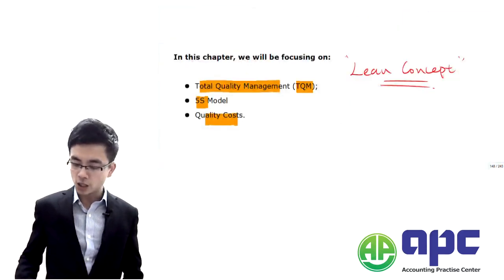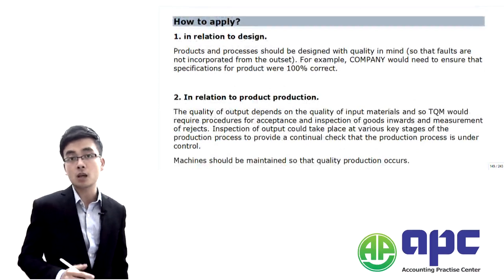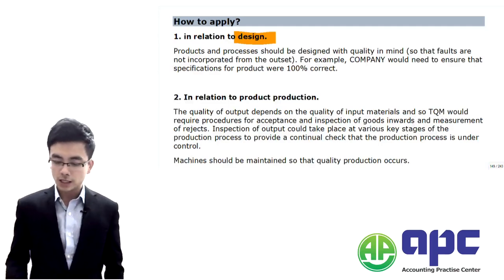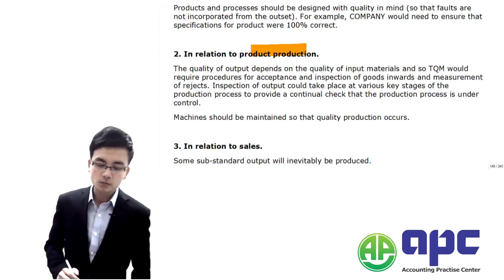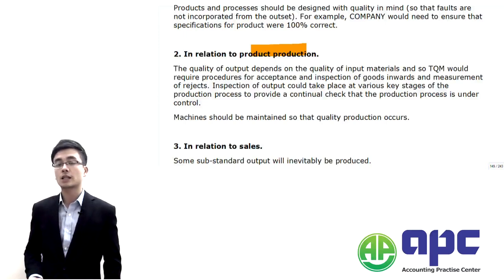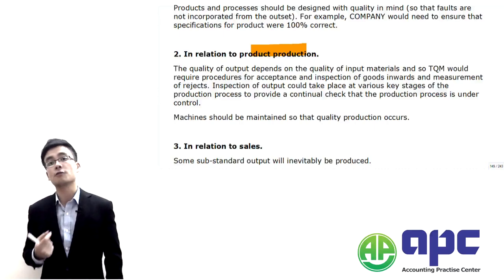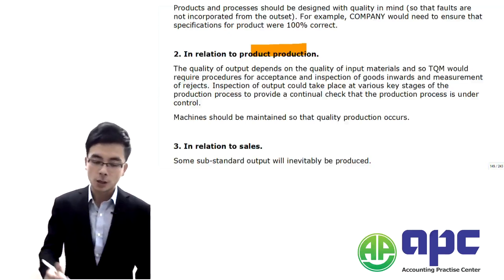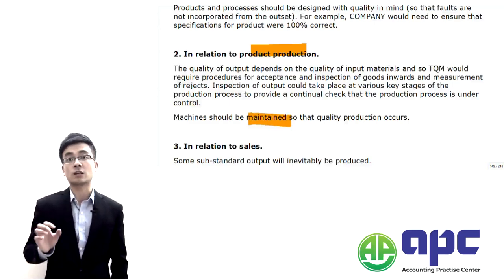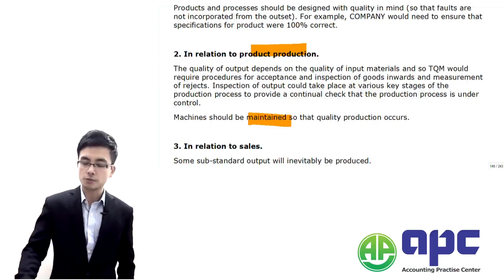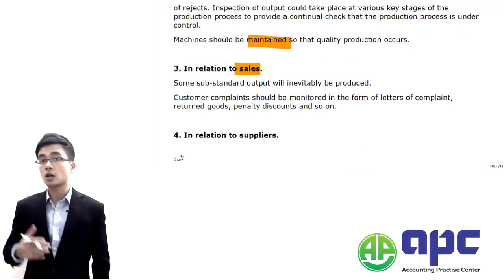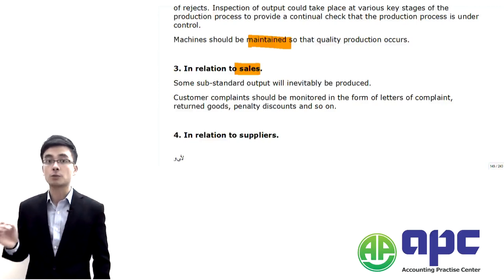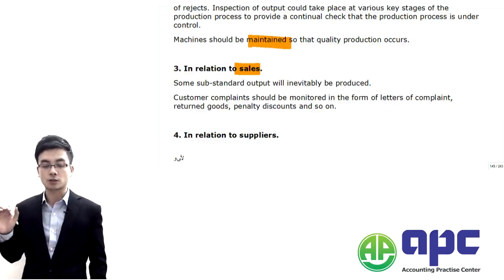Let's look at examples of how to get things right at the first time. First, related to design — if the design is not correct at the first time, the customer will not buy the product. Second, during production — how to manufacture a product that minimises waste from the start. Machine maintenance is also absolutely important in making sure efficiency during the production process. Related to sales: if the customer doesn't like your product, getting that feedback instantly means you can redevelop and provide the correct product to the customer.